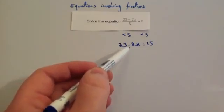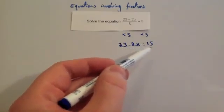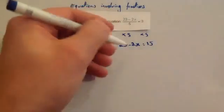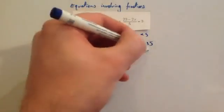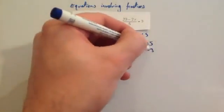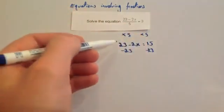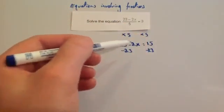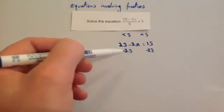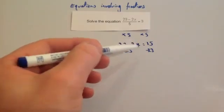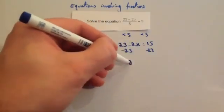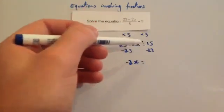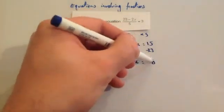Now we've got 23 subtract 2x equals 15. So let's get rid of the 23 on this side — let's take away 23 from both sides of the equation. Taking away 23: 23 subtract 2x, well 23 take away 23 is 0, so you're going to be left with minus 2x equals, and 15 take away 23 is minus 8.